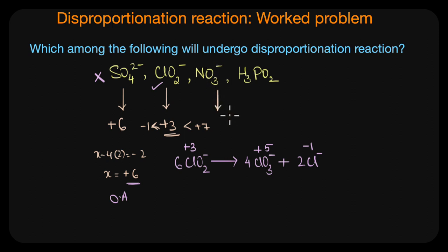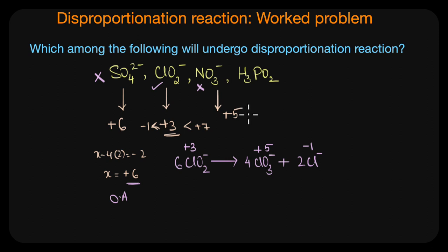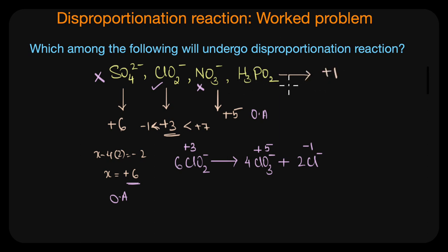The next species is NO3⁻, the nitrate ion. The oxidation state of nitrogen here is plus five, which is the highest possible oxidation state for nitrogen. That means it cannot be further oxidized, and just like sulfate ion, nitrate ion cannot undergo a disproportionation reaction, but can act as a very good oxidizing agent and move to lower oxidation states.